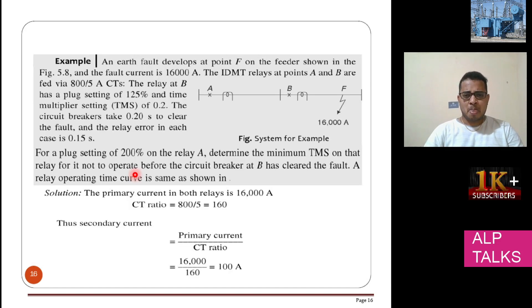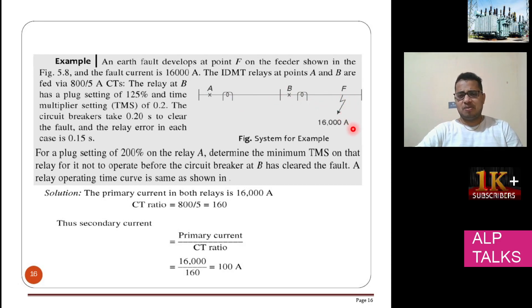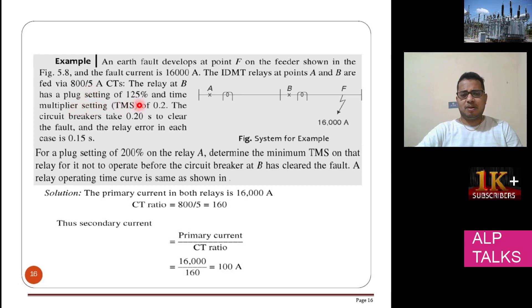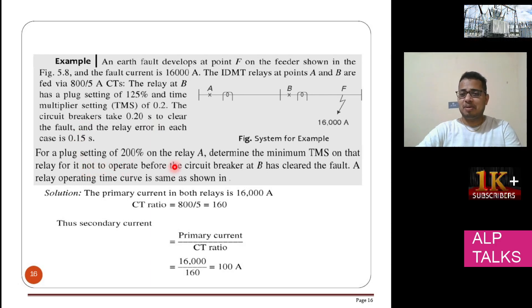Here is another problem. You have a line with two relays at A and B, and C also present. The fault current is around 16,000 amperes. A CT of 800/5 amp is used, with a plug setting of 125% and a time setting of 0.2 seconds at B. The circuit breaker will take 0.2 seconds to clear the fault, and there is a relay error of 0.15 seconds. The plug setting for A is 200 amps. The question is: what is the TMS — how much time will it take for A to operate?